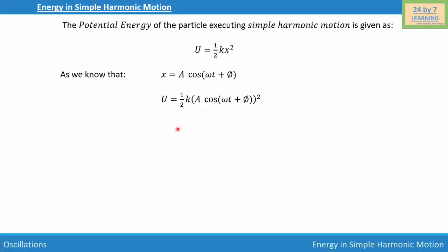Simplifying, the square of A is A², and the square of cos(ωt + φ) is cos²(ωt + φ). So we write U = ½kA² cos²(ωt + φ). This is equation number two.